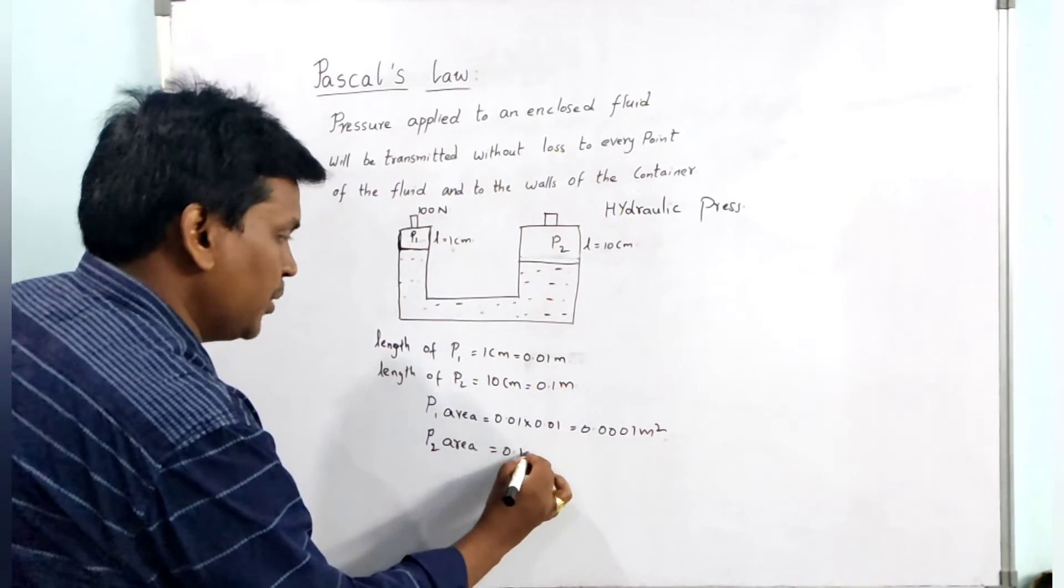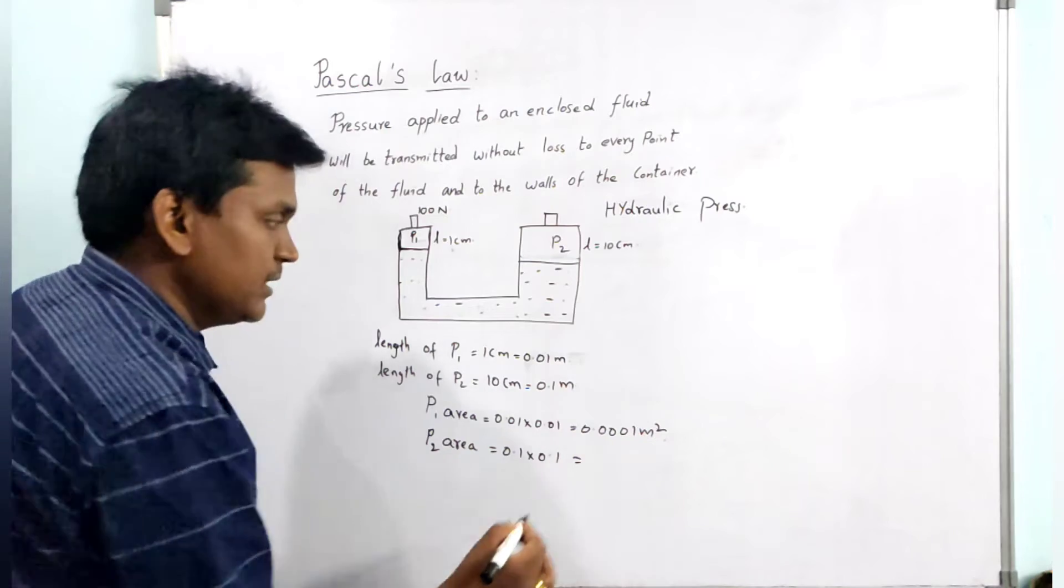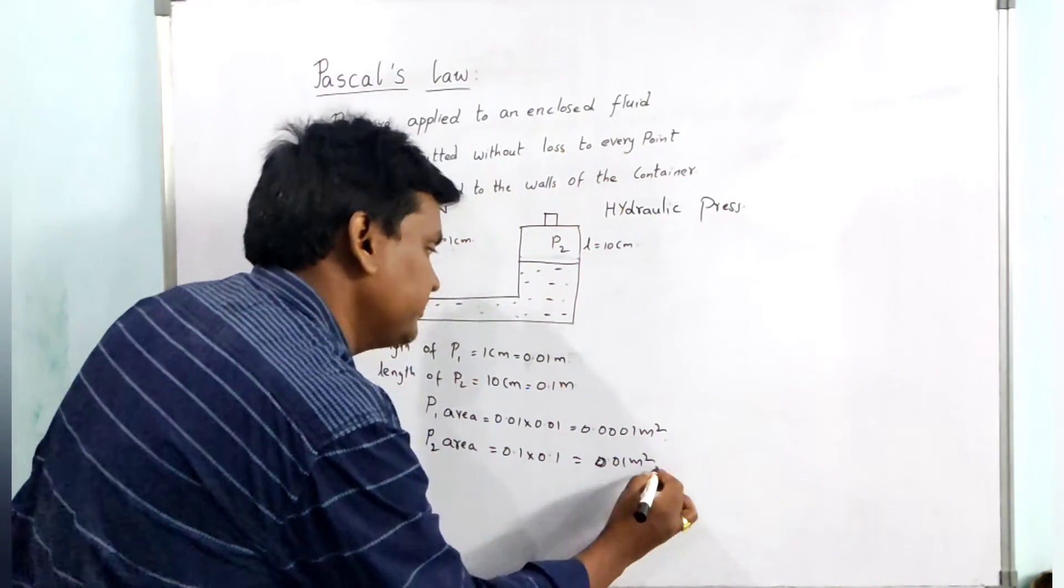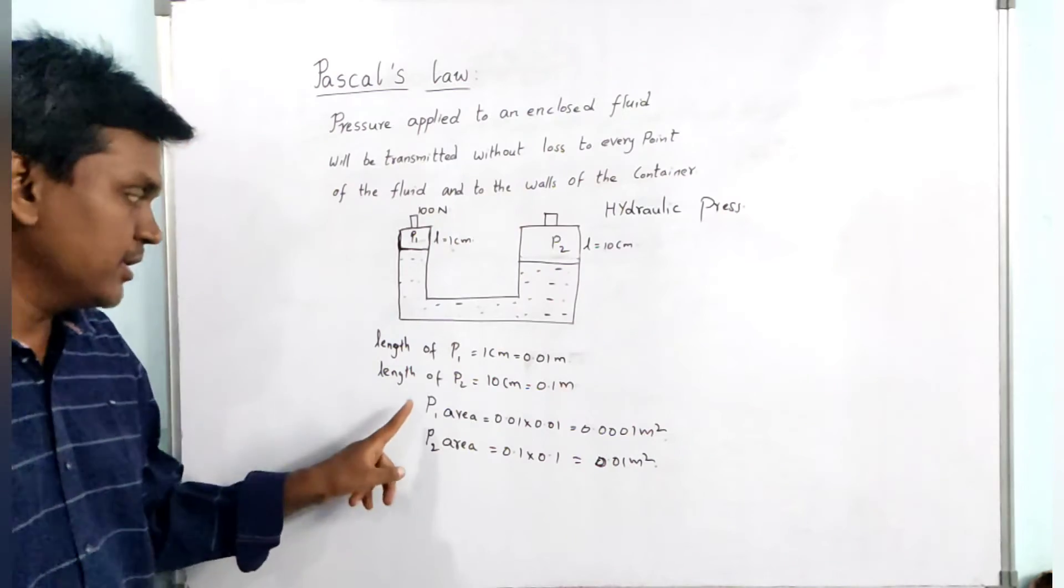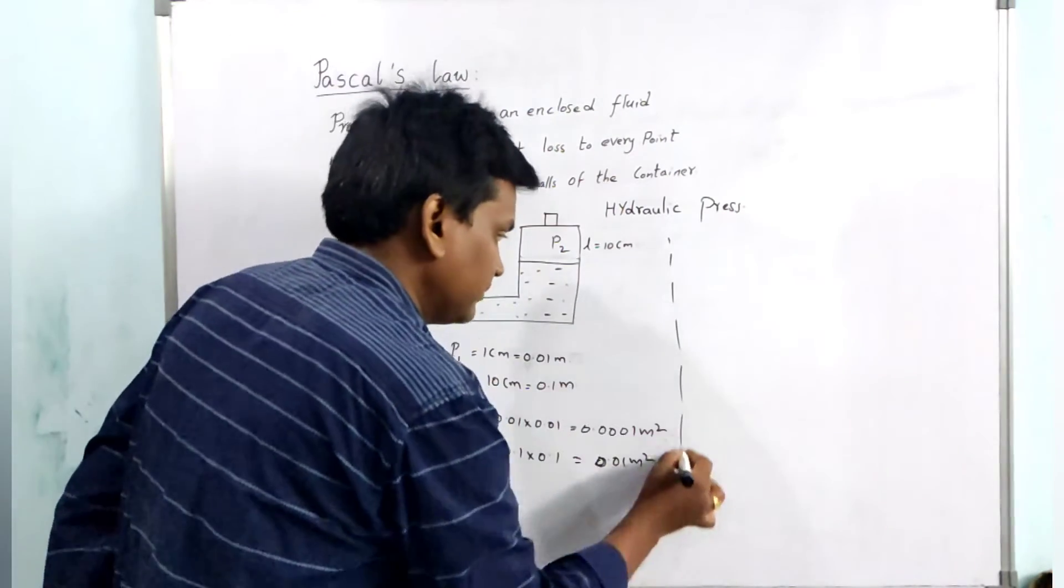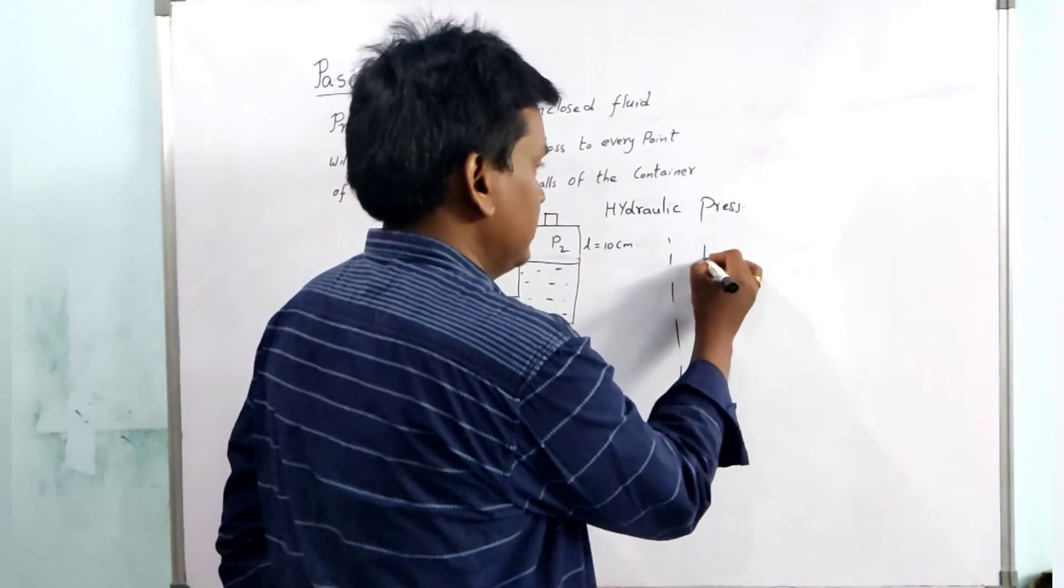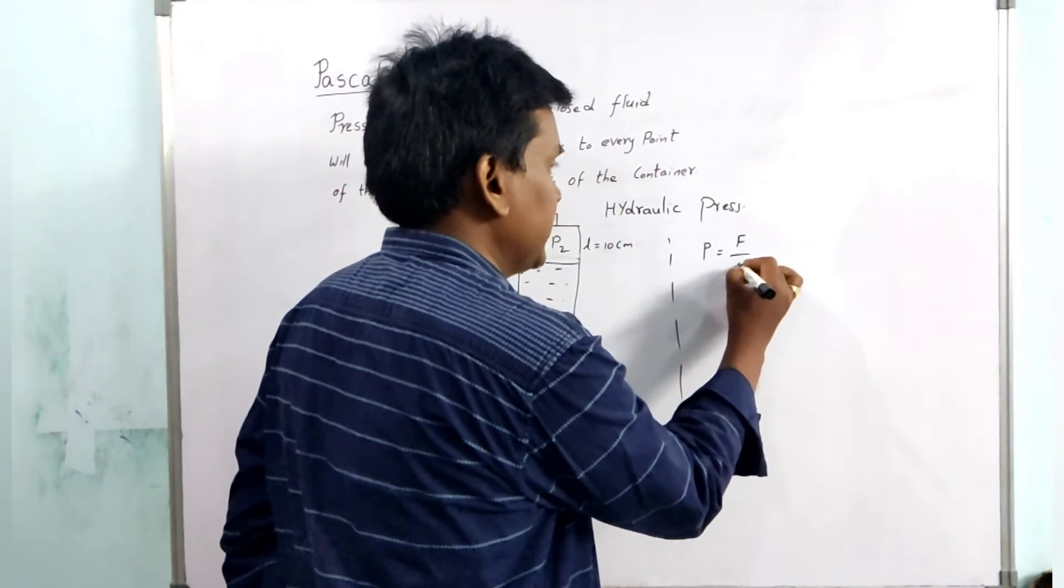In the same way, area of piston 2 is 0.1 times 0.1, which is 0.01 meter square. We know that pressure equals force upon area.